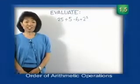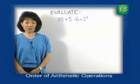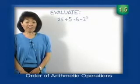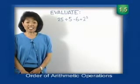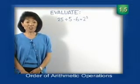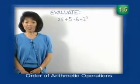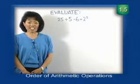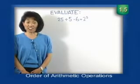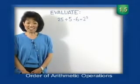Before we look at our first example, let's review the order of operations. First, we must simplify parentheses. Second, exponents. Third, we have to do multiplication or division, whichever one we encounter moving from the left to the right. And finally, addition or subtraction working from the left to the right-hand side.